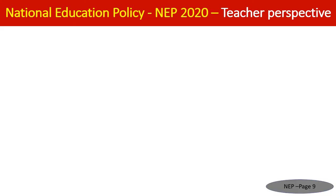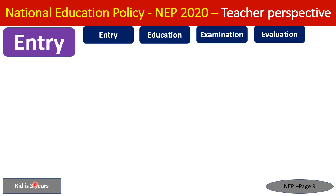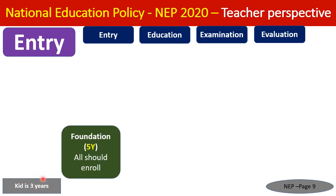Regarding the format of education in NEP 2020: after a child turns three years old, they enter the education system through a Foundation Course lasting five years, structured in three levels. All children aged three and above should enroll in this foundation course — the first two years in anganwadi, preschool, or madrasa.